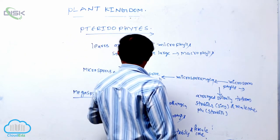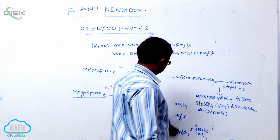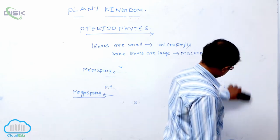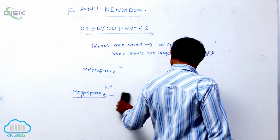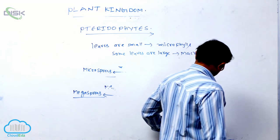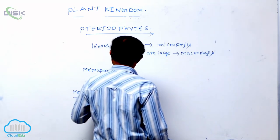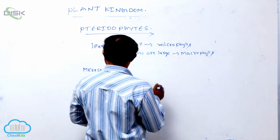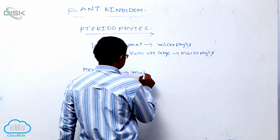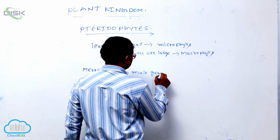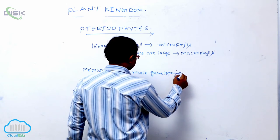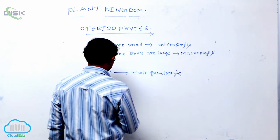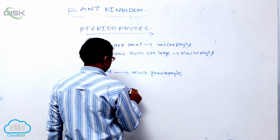When microspores germinate, they produce the male gametophyte. In heterosporous conditions, megaspores germinate to produce the female gametophyte.